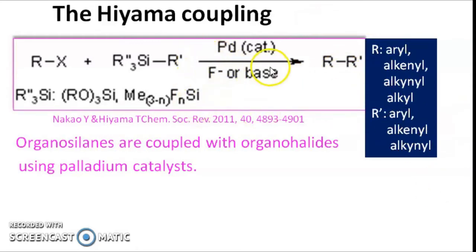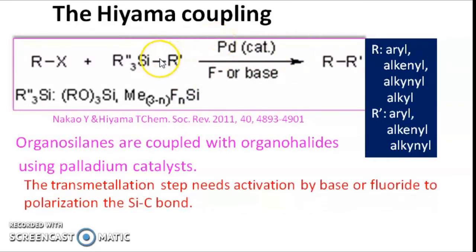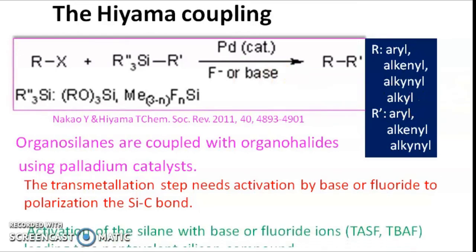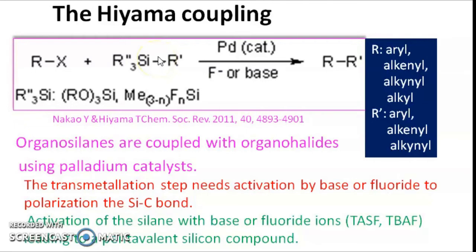Why do we need a base for Hiyama coupling? During the transmetallation step, the organic moiety from silicon has to be transferred to the palladium, so the Si-C bond has to be broken. Silicon and carbon have similar electronegativity, so breaking of the Si-C bond needs activation or polarization of the bond, and this base does that. This activation is usually done by base or fluoride ions like TASF or TBAF, which lead to polarization of the silicon-carbon bond.